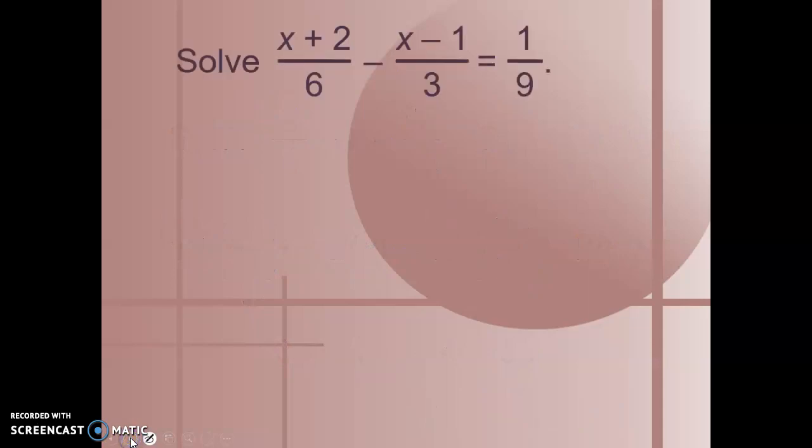Let's try another one. Solve x plus 2 over 6 minus x minus 1 over 3 equals 1 ninth. The first thing that we need to do is find the least common multiple between 3, 6, and 9. The least common multiple is 18.